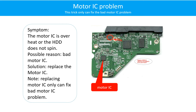Resolder or replace the loose contacts or replace the PCB. Motor IC problem: the motor IC is overheating or the hard drive does not spin. Possible reason: the motor IC is bad. Replacing the motor IC can only fix the bad motor IC problem. If the hard drive PCB or the hard drive itself has another problem, replacing the motor IC will not help.